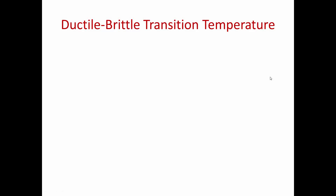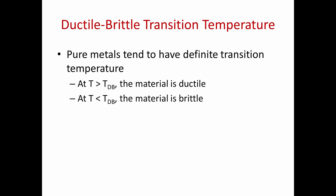This is related to a property of some materials called the ductile to brittle transition temperature. Pure metals which have a transition temperature tend to have a very definite transition temperature called TdB. At temperatures greater than TdB, the material is ductile, and at temperatures below TdB, the material is brittle.